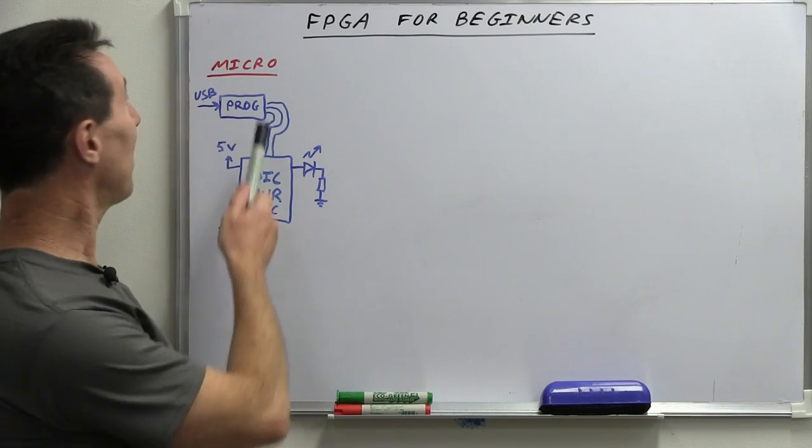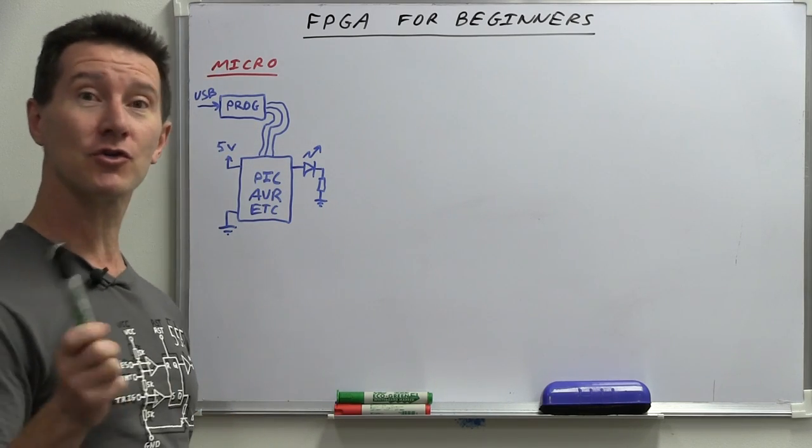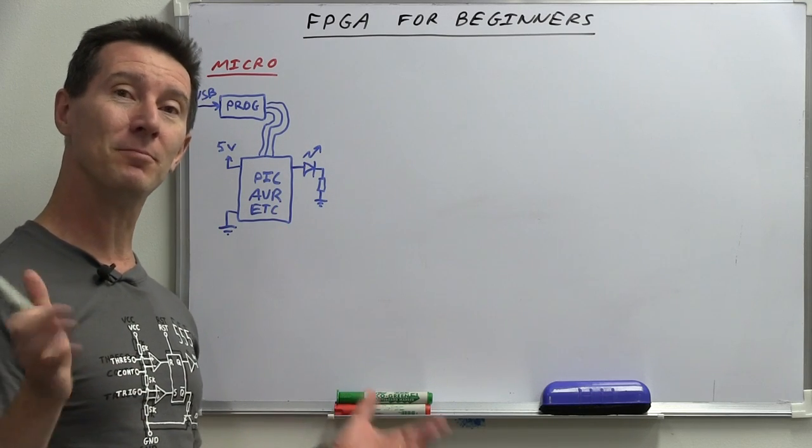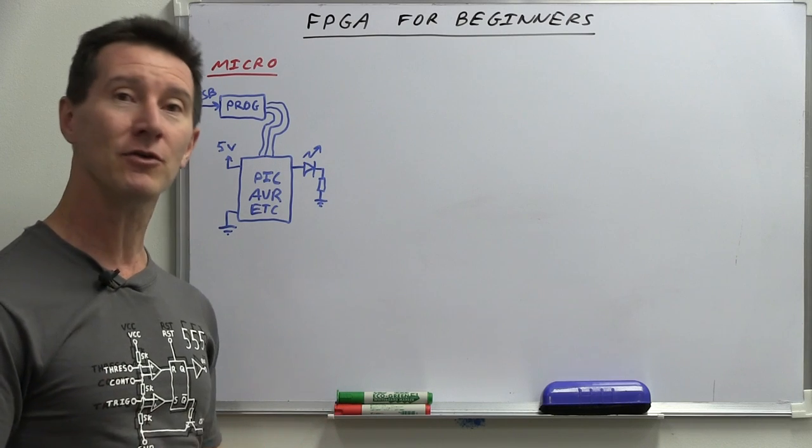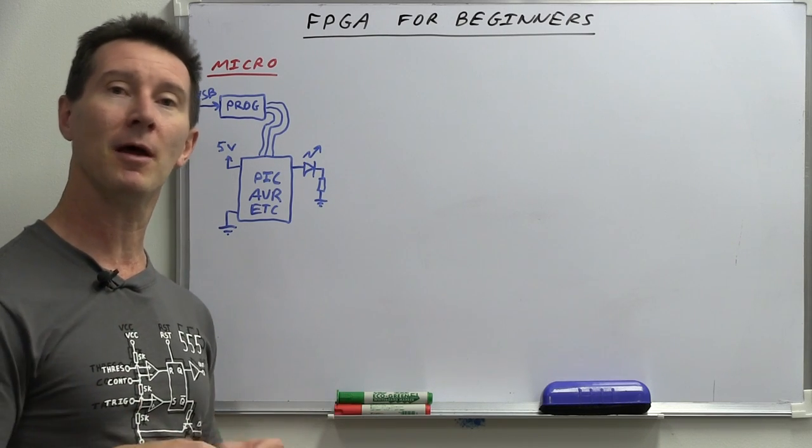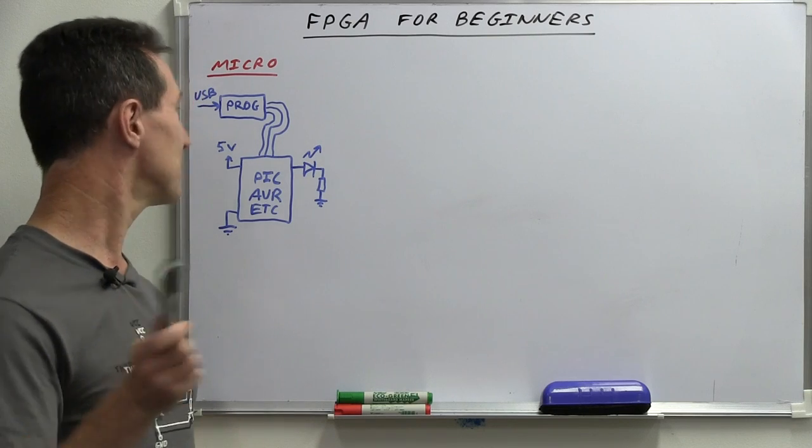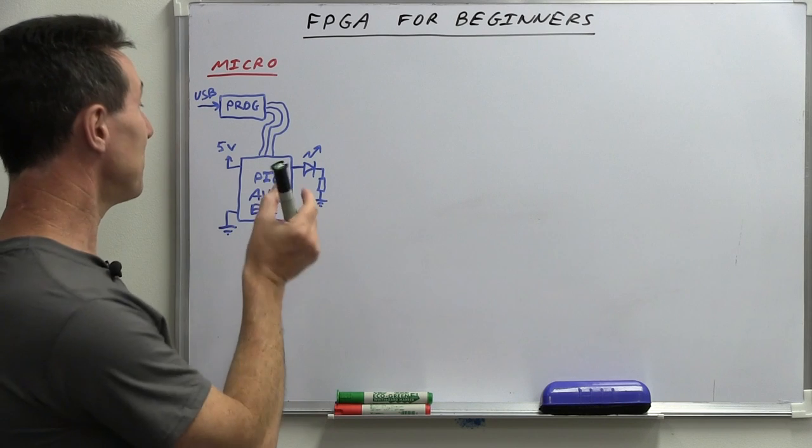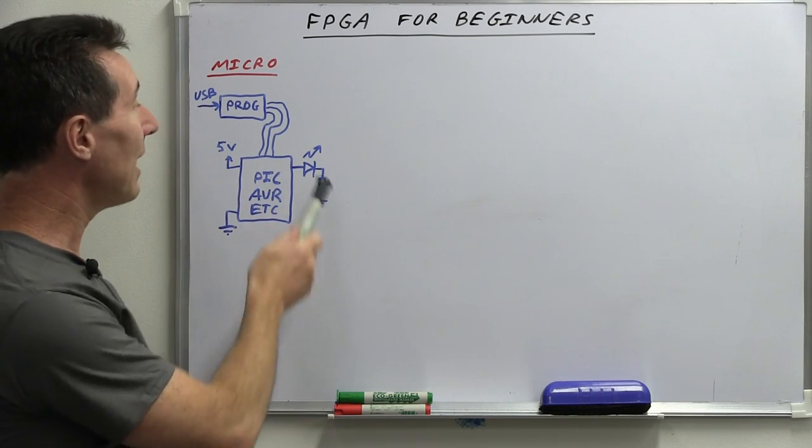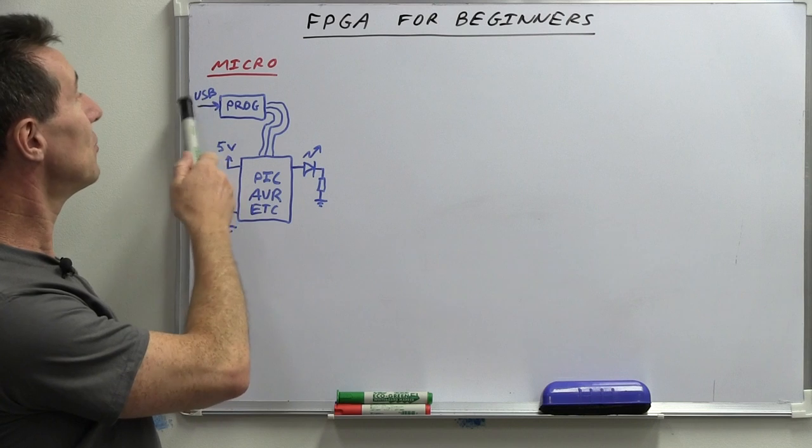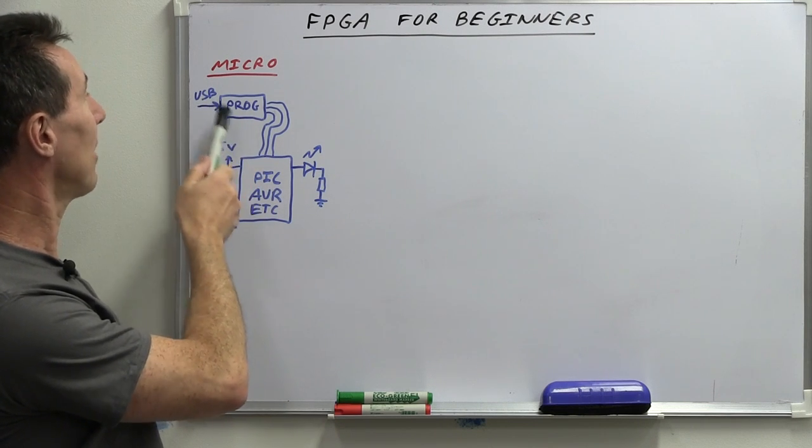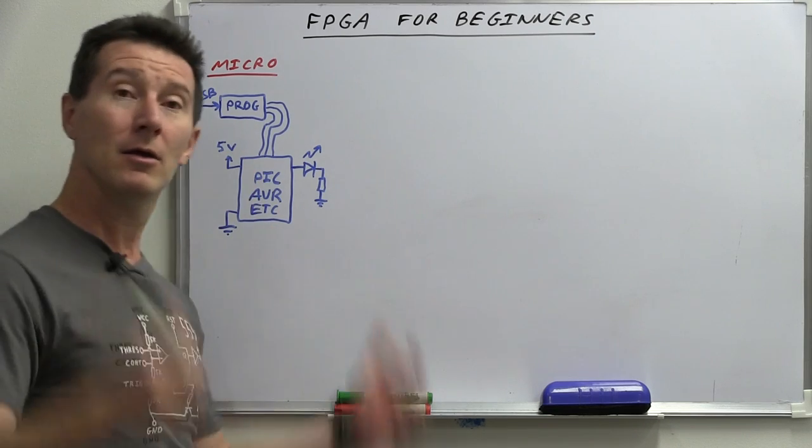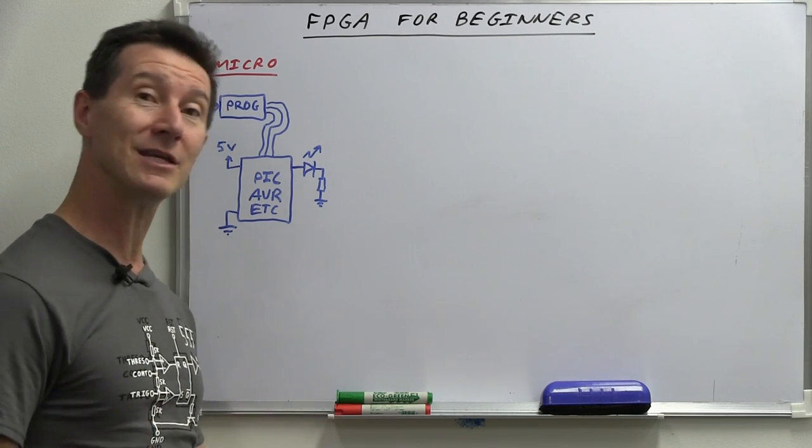Take, for example, your classic microcontroller here. Your PIC, your AVR, your MSP, whatever it is, pretty easy for a beginner to use, even if you don't use something simple like a development board like an Arduino. They're really easy. You get your little PIC or AVR chip, you stick it on your breadboard, you hook up 5 volts to it, and you can flash an LED just using a simple low-cost programmer which plugs into your USB port, couple of wires come over, goes into your chip, and Bob's your uncle.